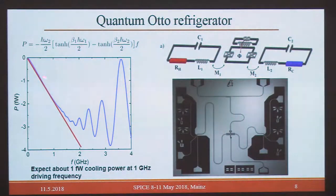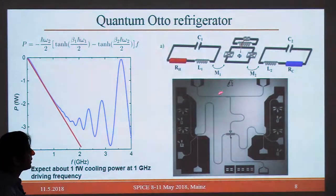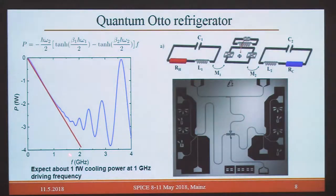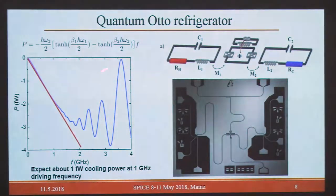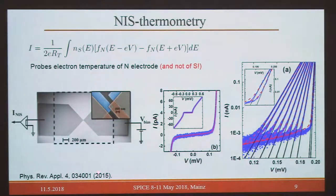This is how we try to detect this: a photo from Jordan in our experimental group shows the structure. We expect about one femtowatt of cooling power at one gigahertz driving frequency. If we can even see these coherent oscillations in the power, it will be the first time one can observe this in a qubit and in a thermal system. For this we need thermometry — as covered nicely in Giaciotto's talk here.